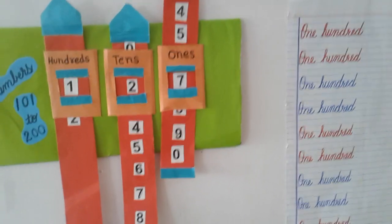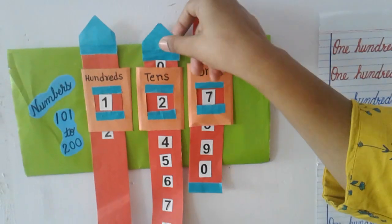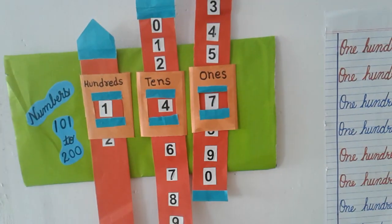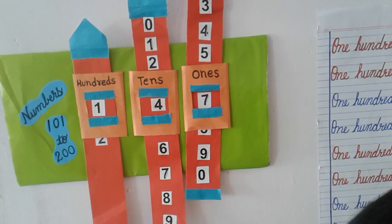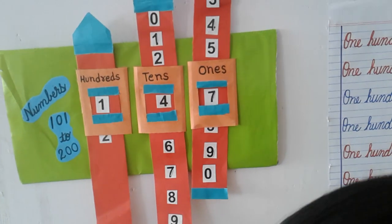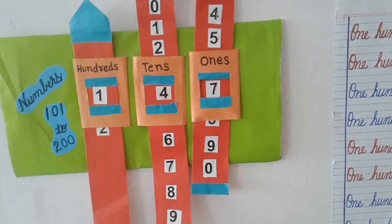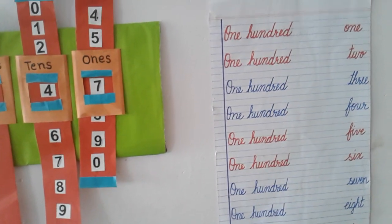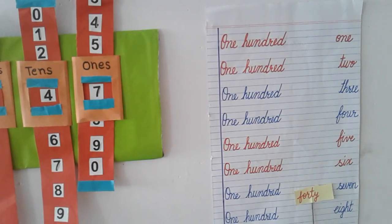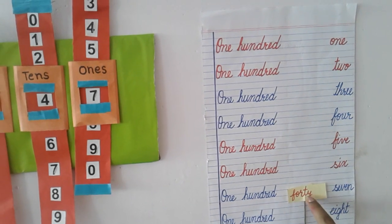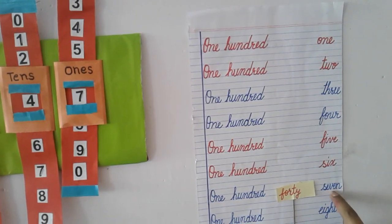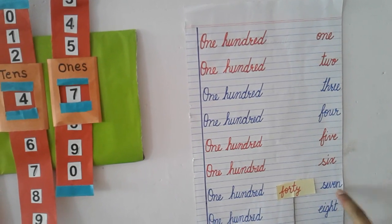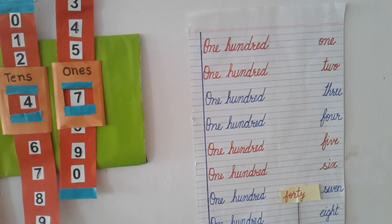Now again I am going to ask you another question: 147. Please write the answer for 147. Now I am going to show you the answer: ONE HUNDRED FORTY SEVEN.